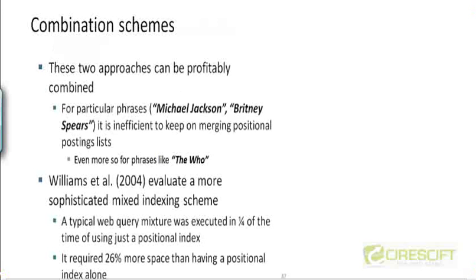Now the two schemes that we saw for answering phrase queries, the biword index and the positional index, these two schemes can actually be combined into a hybrid approach. For example, we could keep a positional index for most of the queries. So most of the phrase queries could be handled using the positional index. But certain queries that are very popular, certain phrase queries that are very popular, like Michael Jackson, Britney Spears, and so on.